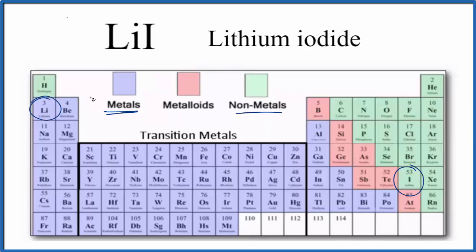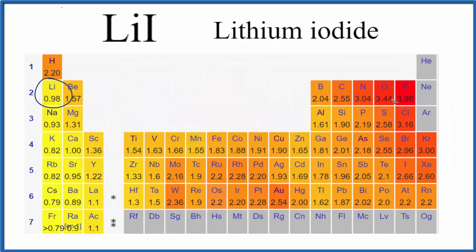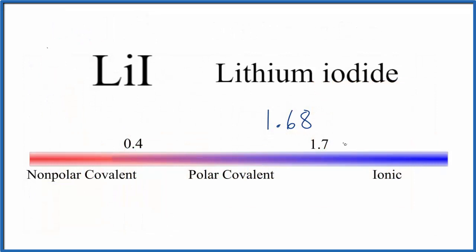But it's always a good idea to check when you have a small element like lithium or beryllium or fluorine. Let's take a look at the electronegativity to see if lithium iodide is ionic or covalent. We find lithium here at 0.98, and iodine at 2.66. So 2.66 minus 0.98 gives us a difference of 1.68 — that's the difference in electronegativity between lithium and iodine. We're right on the line between covalent and ionic; sometimes you'll see 1.7 or 2.0 as the transition point. So this is just about polar covalent or ionic.